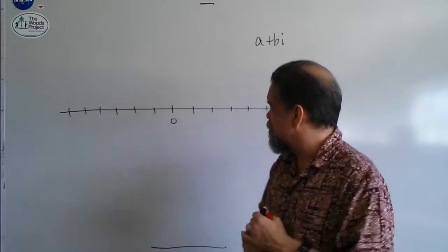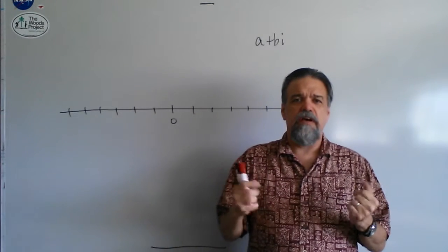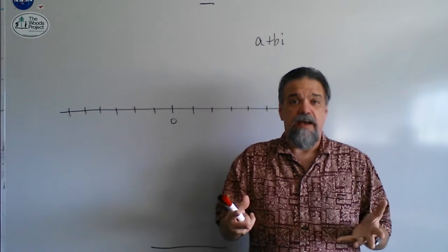Now, I guess to figure out where complex numbers are on the number line, first I have to answer the question, where's i on the number line?